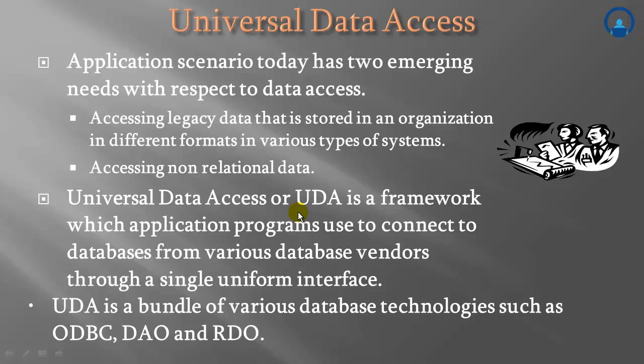Coming to universal data access. With respect to data access, the application scenario today has two emerging needs: accessing legacy data or information stored in an organization in different formats and various types of systems, and accessing non-relational data. The need is to have a single high-performance framework or model with which applications can connect to various database products without changing the entire code. Universal data access, or UDA, is one such framework which application programs use to connect to databases from various database vendors through a single uniform interface.